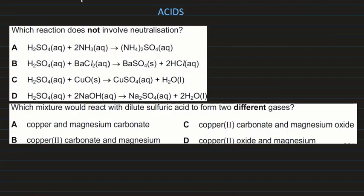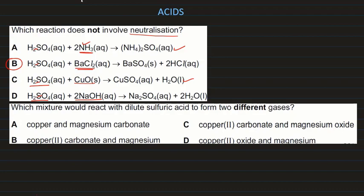Which reaction does not involve neutralization? Neutralization is when an acid reacts with a base. Sulfuric acid reacting with ammonia — ammonia is a base, so that is neutralization. Sulfuric acid reacting with barium chloride — barium chloride is not a base, so that is not a neutralization reaction. Copper oxide is a base, and sodium hydroxide is a base — both their reactions with acid are neutralization. So B is the correct answer.